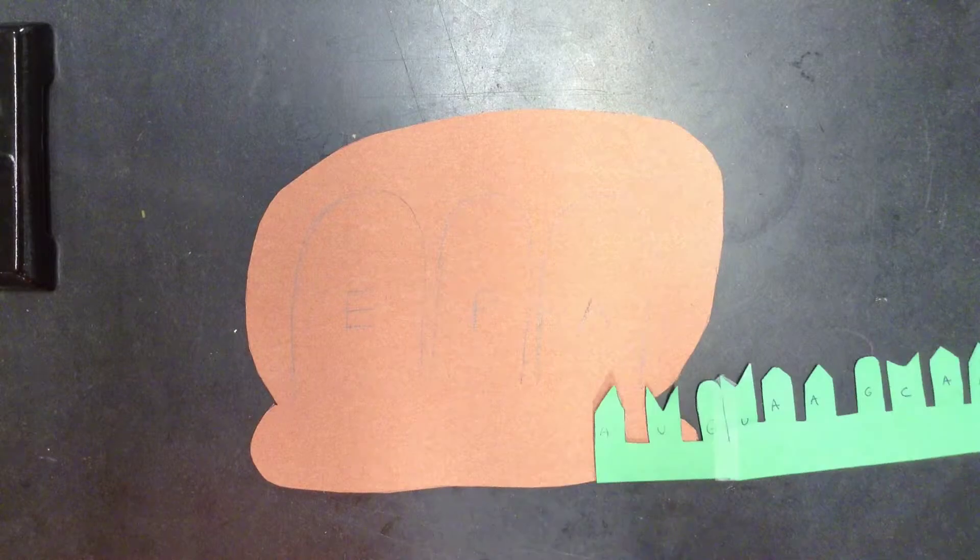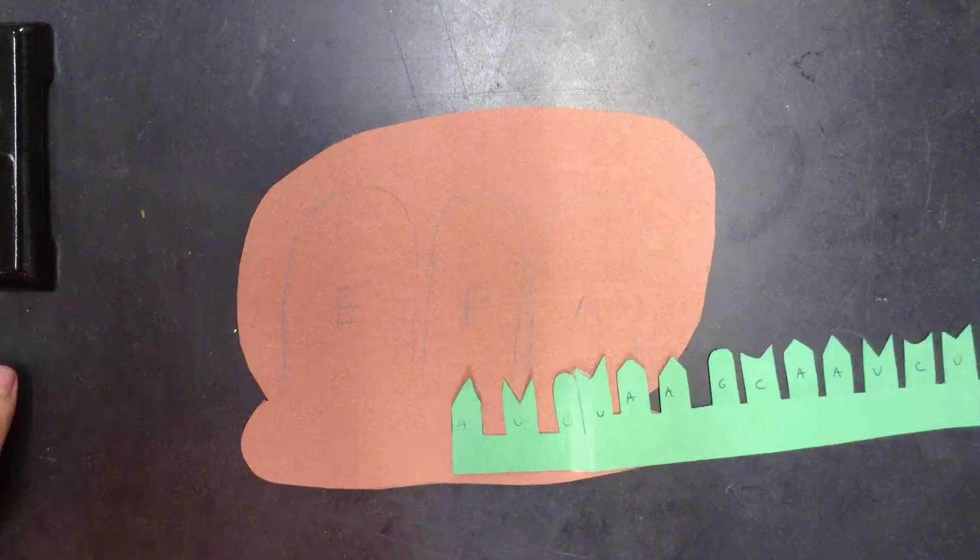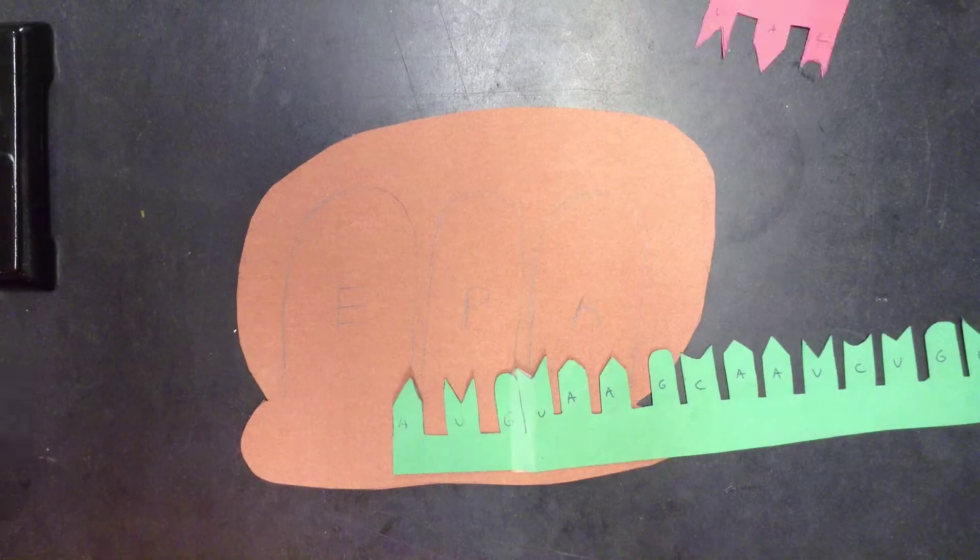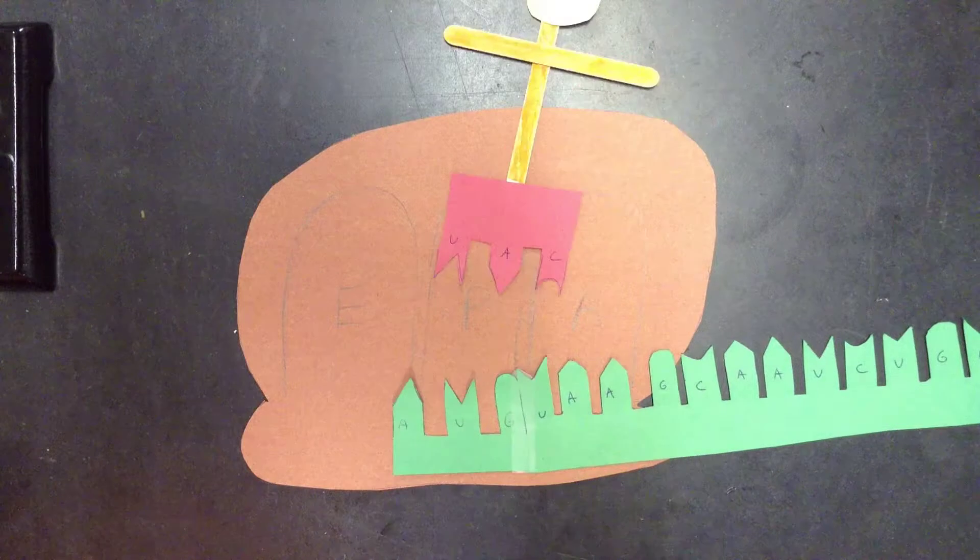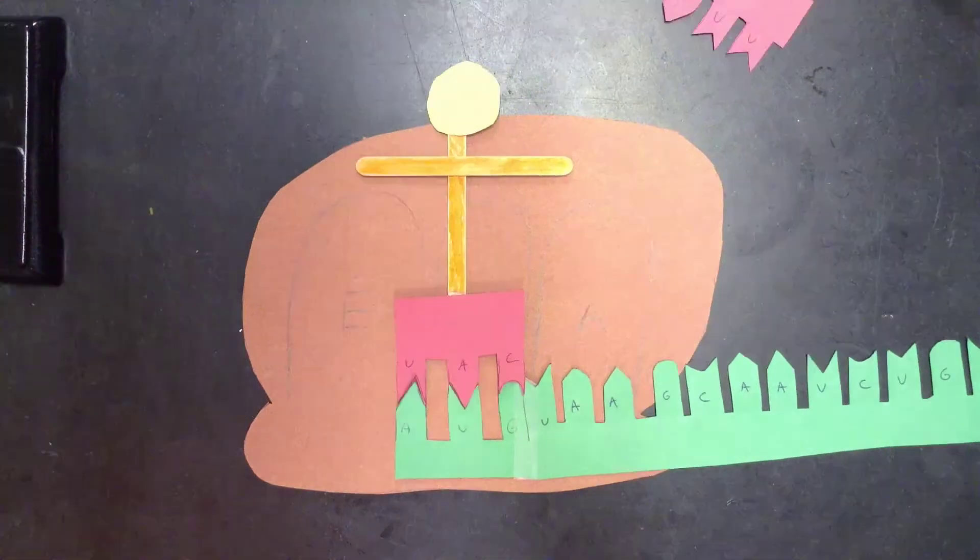In comes an mRNA molecule with specific instructions from the DNA in the nucleus for making proteins. Next comes a tRNA molecule into the P site with an anticodon which corresponds to a specific codon on the mRNA molecule.